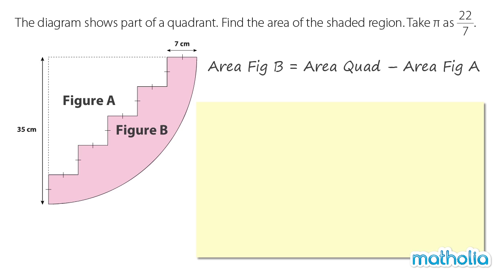First, let's find the area of the quadrant. A quadrant has an area of 1 quarter the area of a circle. So the area is given by 1 quarter times pi times radius times radius.